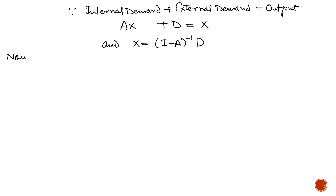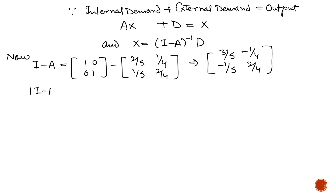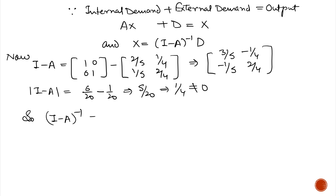Now we calculate I minus A. I is the identity matrix [1, 0; 0, 1] minus A which is [2/5, 1/4; 1/5, 2/4]. The result of I minus A is [3/5, -1/4; -1/5, 2/4]. We calculate the determinant of I minus A, which equals 5/20, implying 1/4, which is not equal to 0. So I minus A is a non-singular matrix and its inverse is possible.